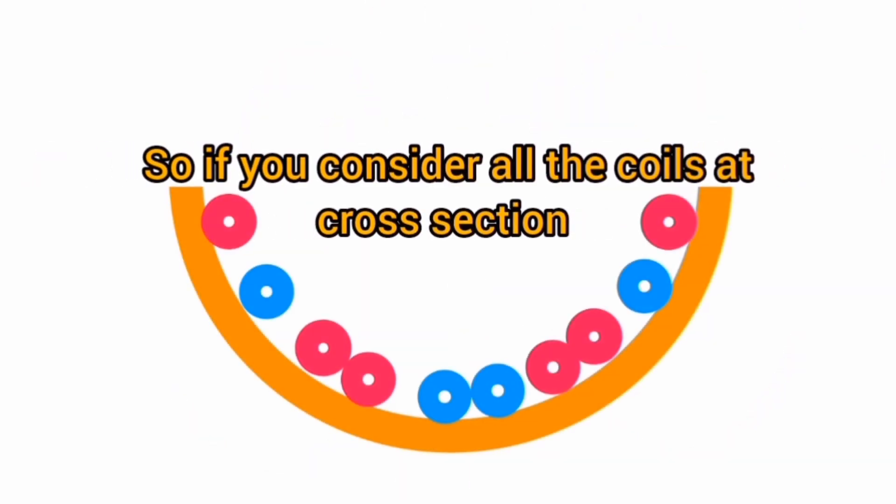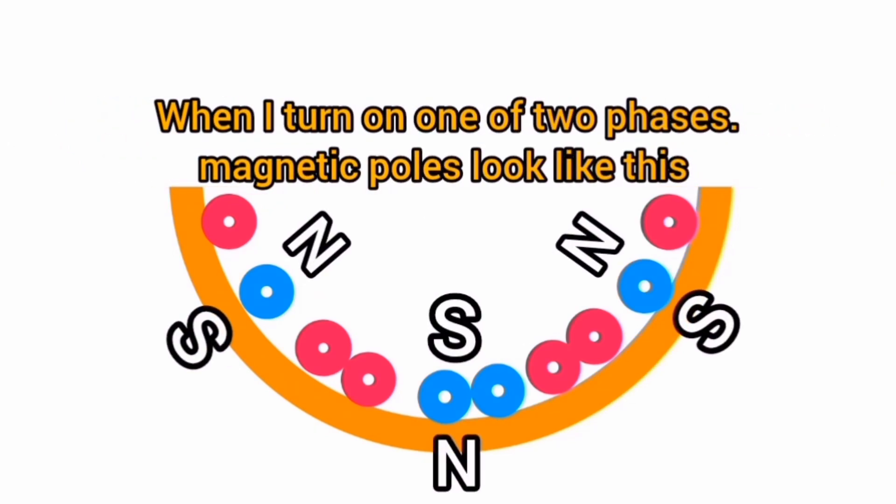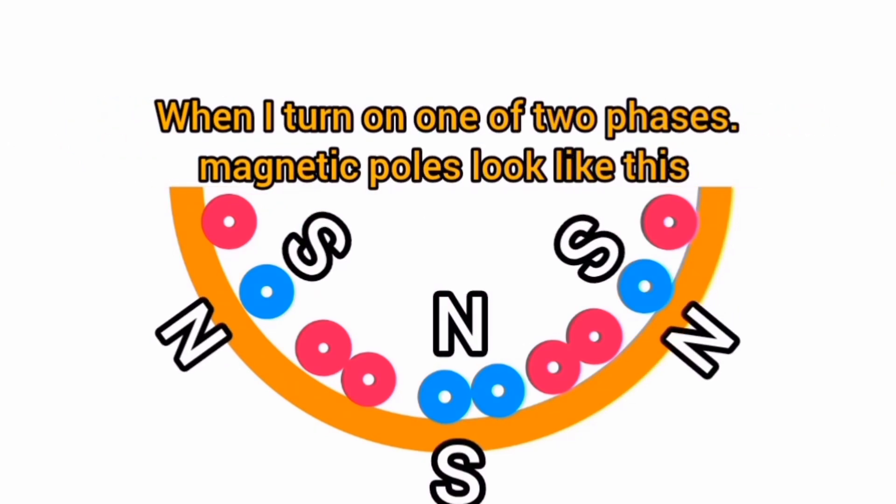If you consider all the coils at cross section, when I turn on one of two phases, magnetic poles look like this.